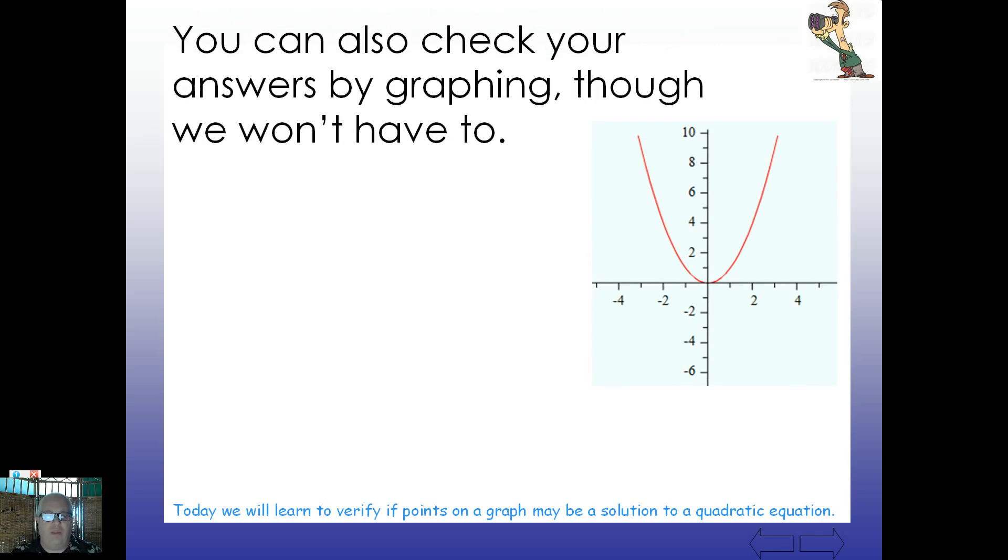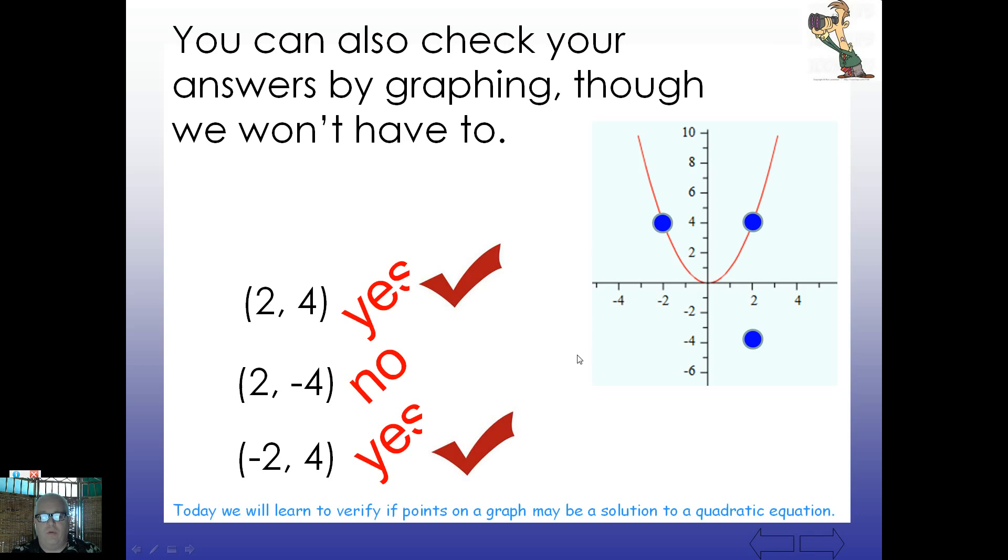Now we're not going to have to graph these, but you could also check your answers by graphing. Two, four would appear here. That you'll notice is on the graph. The other one we found was two negative four. Well, if you plot two negative four, is this on the red line? Well, obviously it's not. So it's not a solution. And negative two, four indeed is on the graph. So again, there it is. So if you were to graph this or as we'll see with maybe some graphing calculators in our work, you'll see that there are points that are plotted on a line, in this case on this parabolic line here.